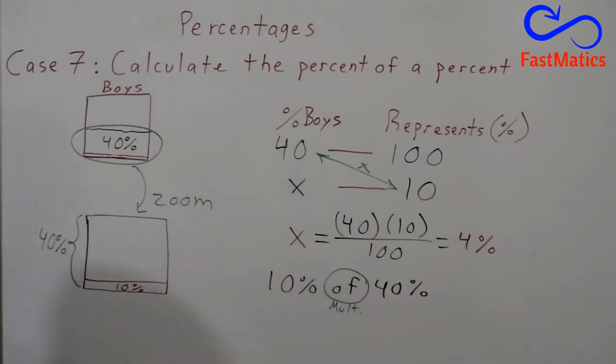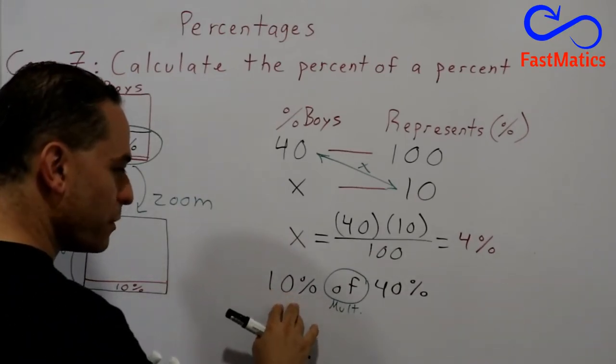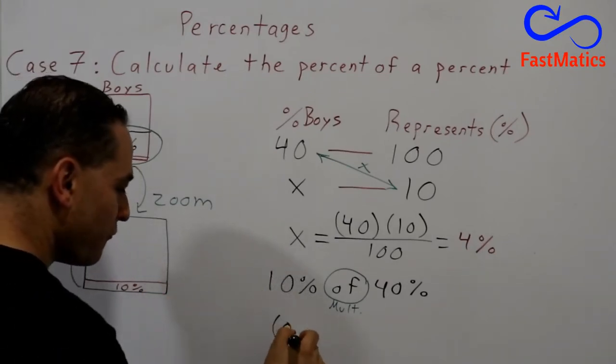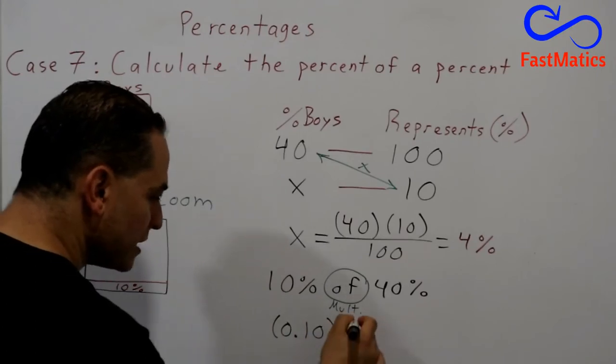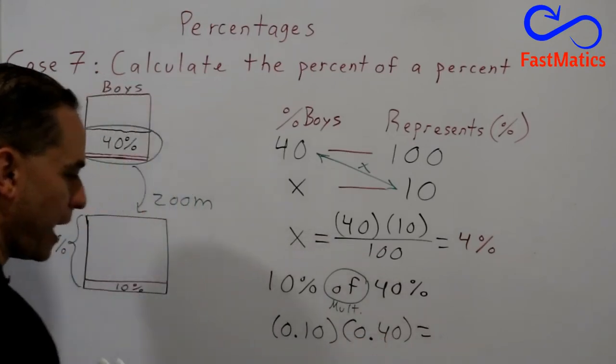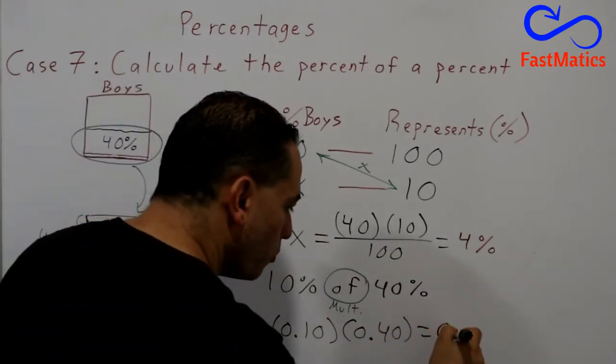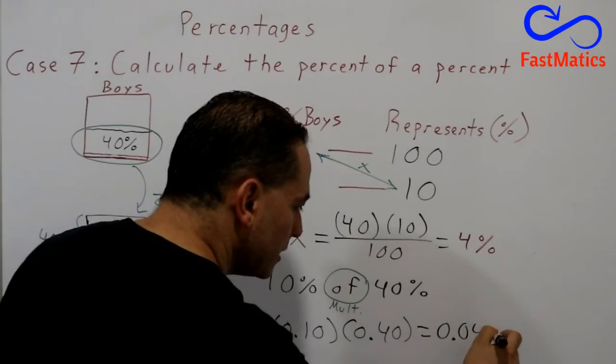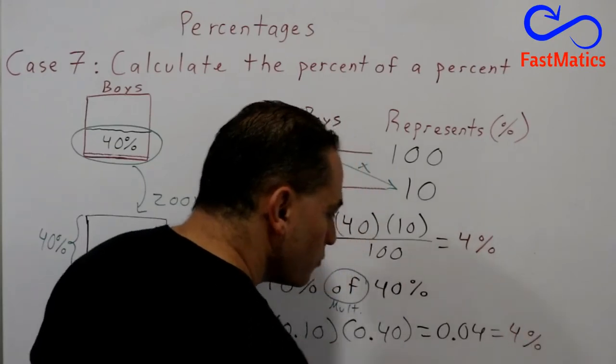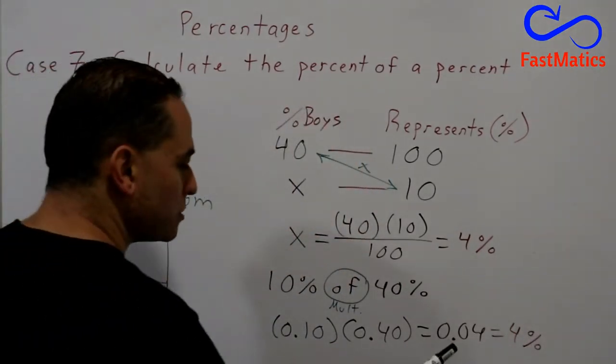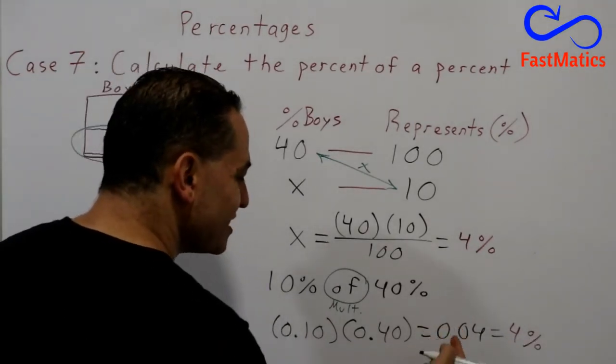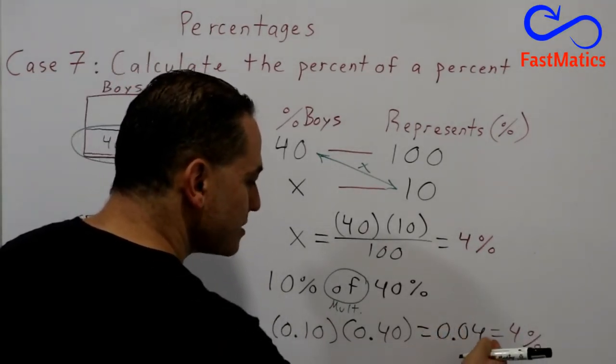But we are going to write it in a decimal form: 0.10 times 0.40. And we get 0.04. That is 4%. Remember that always, if you want to convert a decimal number to percentage, you have to move the decimal point two places to the right.